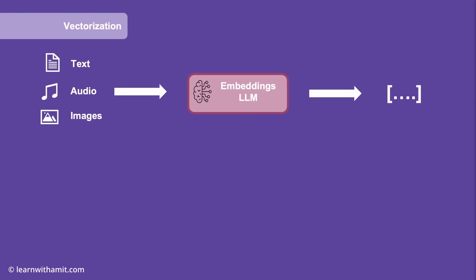In our house floor example we had just two dimensions — X and Y. But these large LLMs have a large coordinate system, commonly with 1536 dimensions. This is huge. As humans we can't imagine beyond the three-dimensional world we live in, but this is the power of these embedding LLMs — they have coordinate systems of more than 1500 dimensions.